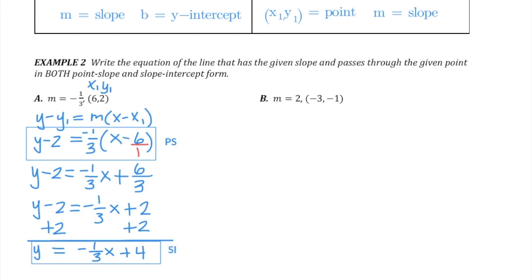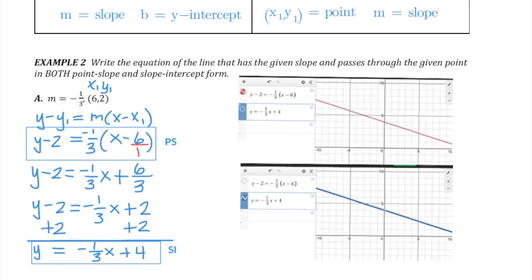It's important to understand that these equations of a line are just two different names for the same line. This equation here, when graphed, gives you the exact same line as this equation down here. You can see in the top graph, I've got the point-slope version of the equation of this line, and it creates the red line. And then down in the bottom, I have the slope-intercept version of the line, and notice you get the exact same line.